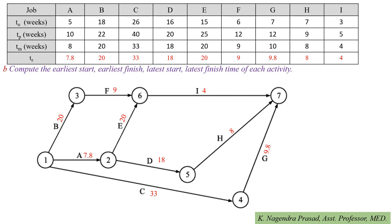Next, we indicate the Te values on the network diagram and calculate earliest and latest times for each activity. First, we determine the earliest start time and earliest finish time by the forward pass method, starting from activity A which begins at the first event. The earliest start time for the beginning activity is 0. So earliest start time for activity A is 0, and finish time = 0 + 7.8 = 7.8.